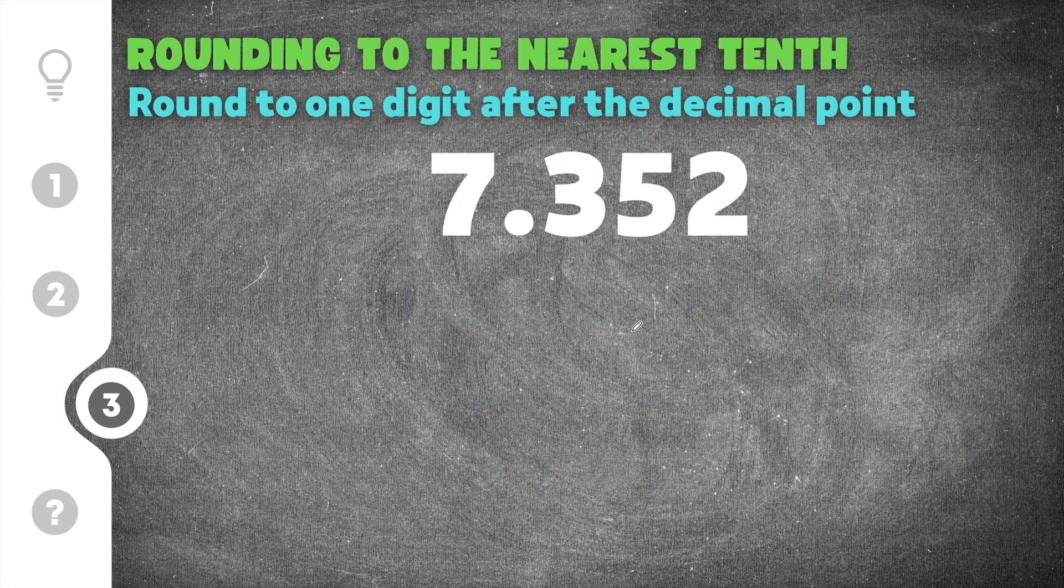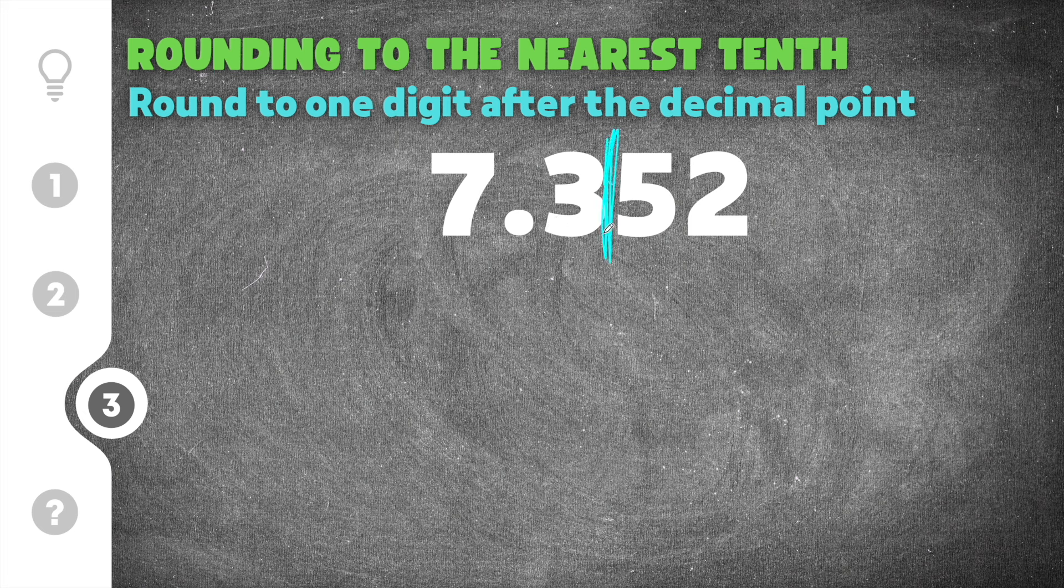Finally, our last question gives us 7.352. Now we need to round to the nearest tenth, so that's one spot after the decimal. So I'm going to go ahead and draw my line here. And now we have a five in the hundredth spot.